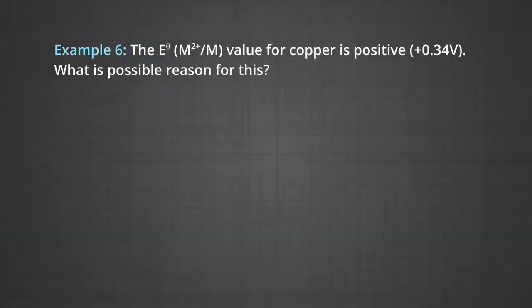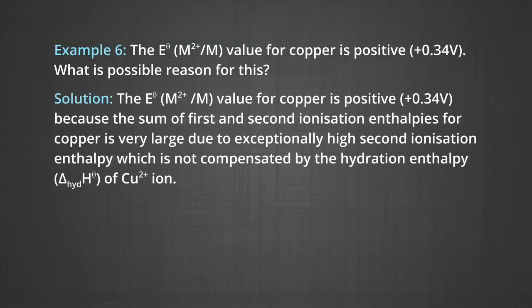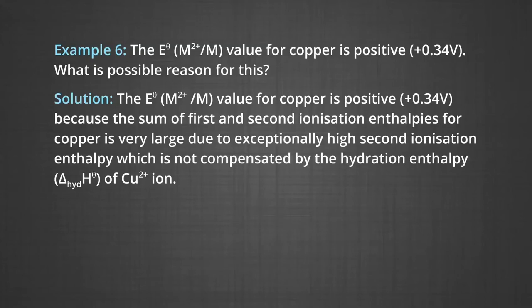Another example: The standard electrode potential from M2+ to metal atom for copper is positive, that is +0.34 V. The reason is that the sum of the first and second ionization enthalpies for copper is very large due to an exceptionally high second ionization enthalpy, which is not compensated by the hydration enthalpy of Cu2+ ions.